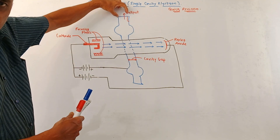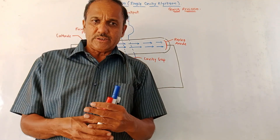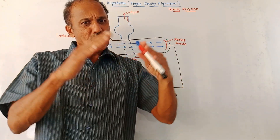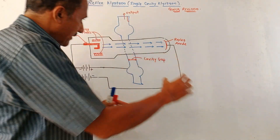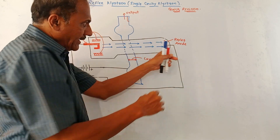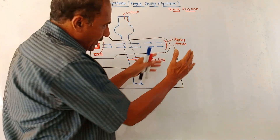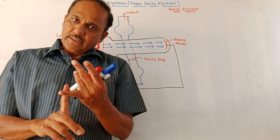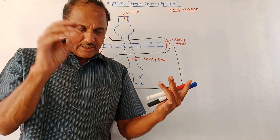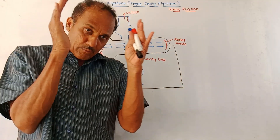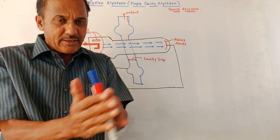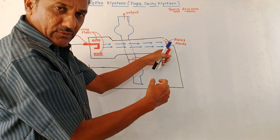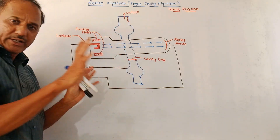The output is taken from the upper end of the cavity. In the first case, some electrons enter the cavity when the cavity gap voltage is zero — there is no change in the speed of these electrons. When they travel forward and reach the repeller anode, they get reflected and come back to the cavity. In the second case, some electrons enter the cavity when the cavity gap voltage is slightly positive — acceleration is provided to such electrons. These accelerated electrons move further, reach the anode, get reflected back, and again enter the cavity.